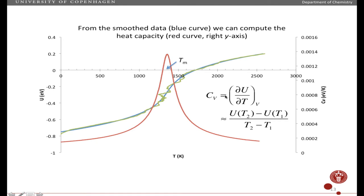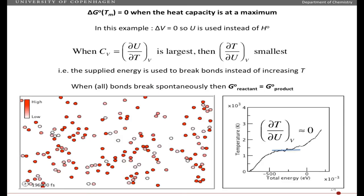As you saw in the previous simulation, the volume here doesn't change, and so here we have the heat capacity at constant volume, which is the change in internal energy as a function of the change in temperature. So when the heat capacity is at a maximum, that means that the change in temperature with respect to added energy is smallest. And so that means that the supplied energy is used to break the bonds instead of increasing the temperature.